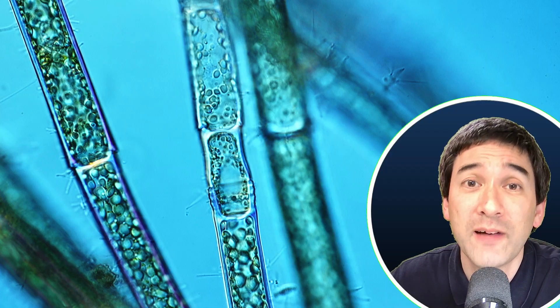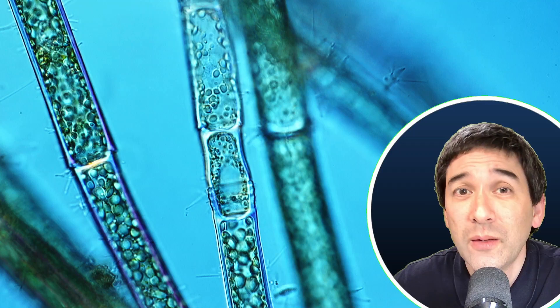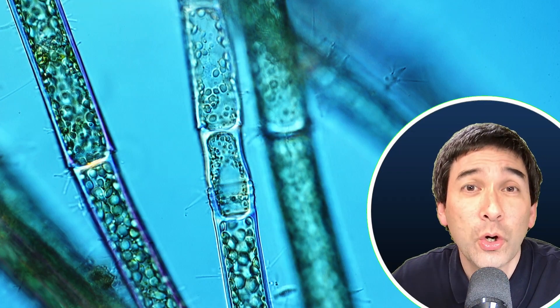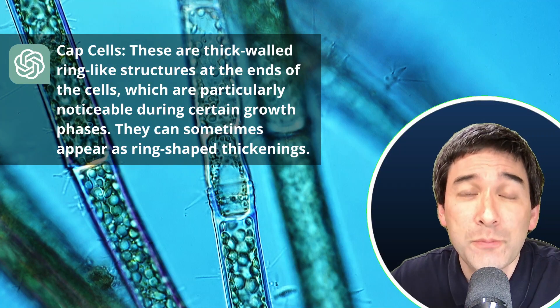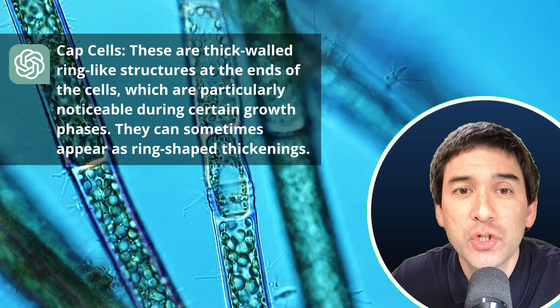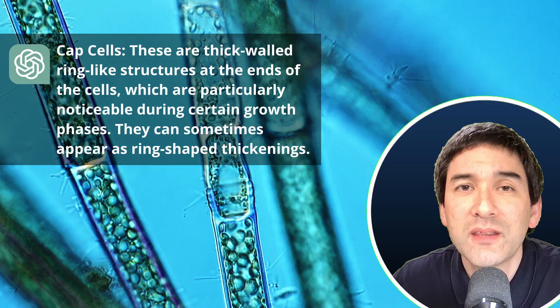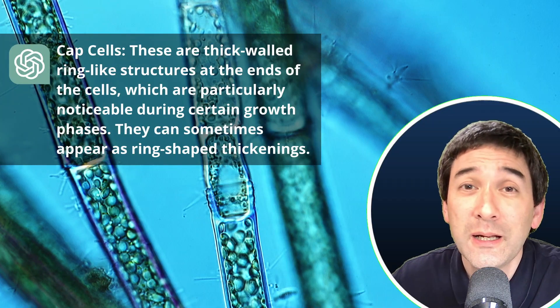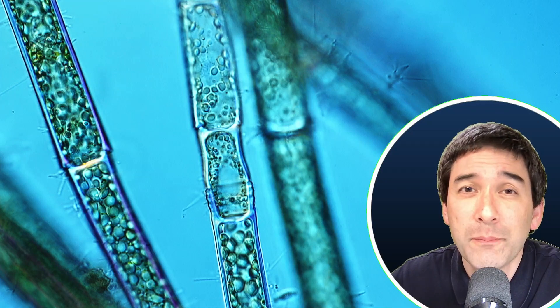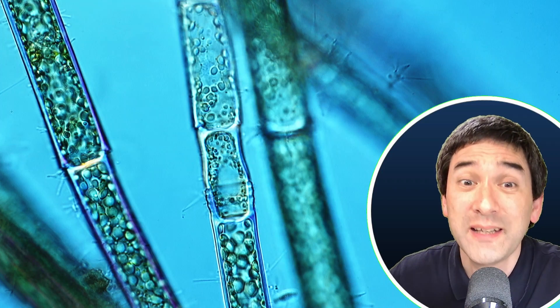Then using a picture search, I found algae that contain those interesting ring-shaped structures, which are thickenings of the cell wall. And they have even a specific name. They are called cap cells. And this is also what ChatGPT told me. These are thick-walled ring-like structures at the ends of the cells, which are particularly noticeable during certain growth phases. They can sometimes appear as ring-shaped thickenings. And they're basically a leftover from cell division. The process is a little bit complex in cell division of this algae here. And these are basically thickenings that are kind of leftovers or remnants of cell division. So I've identified it.